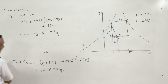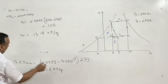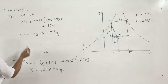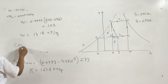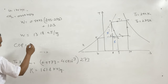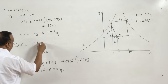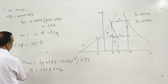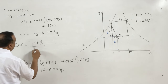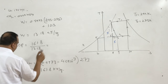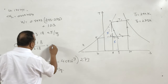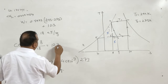Now we have both values: refrigerating effect and work consumed by the compressor. So the COP of the system is 161.8 divided by 13.18, which equals 12.3.